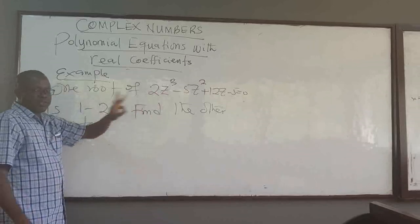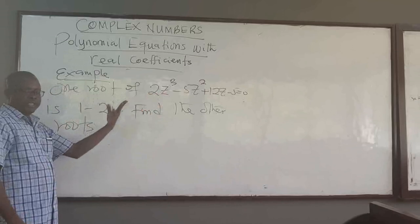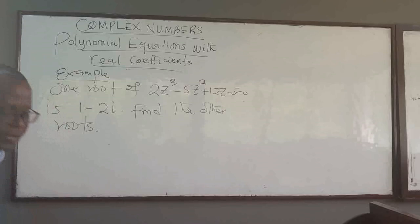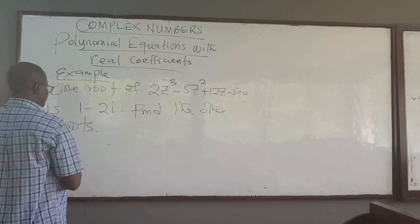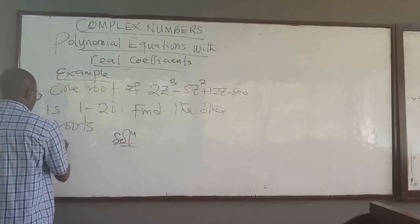Since it's cubic, we expect to have three roots. We have one of them, how do we get the other two? So that is basically what this question is about. And so, once from our previous theorem...